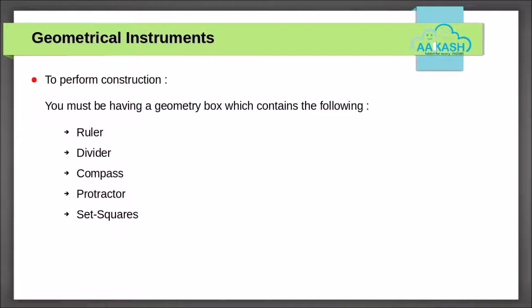We should have a geometry box which contains geometrical instruments like this. Ruler, whose one side is marked with centimeters and millimeters and the other side is marked with inches and its divisions. Divider, whose sides are equal and pointed to accurately capture two points.